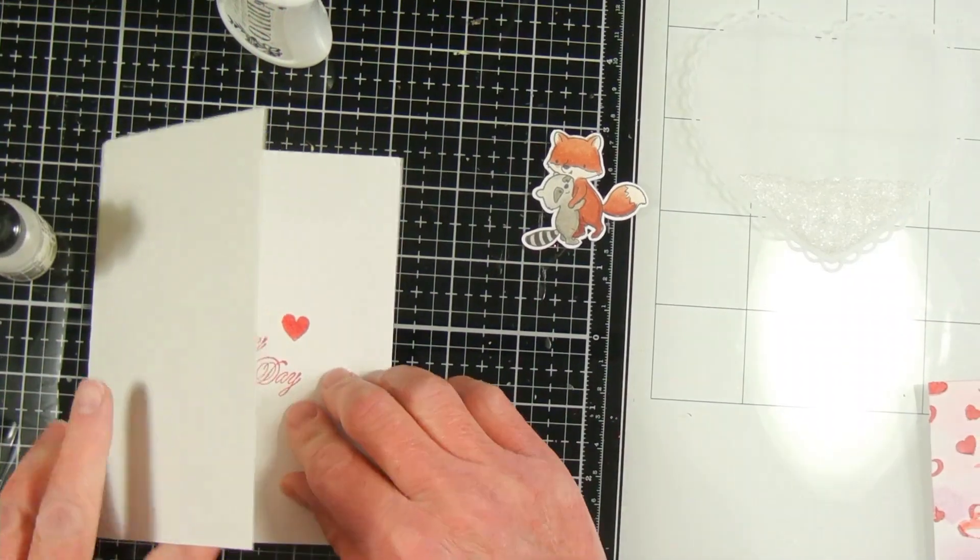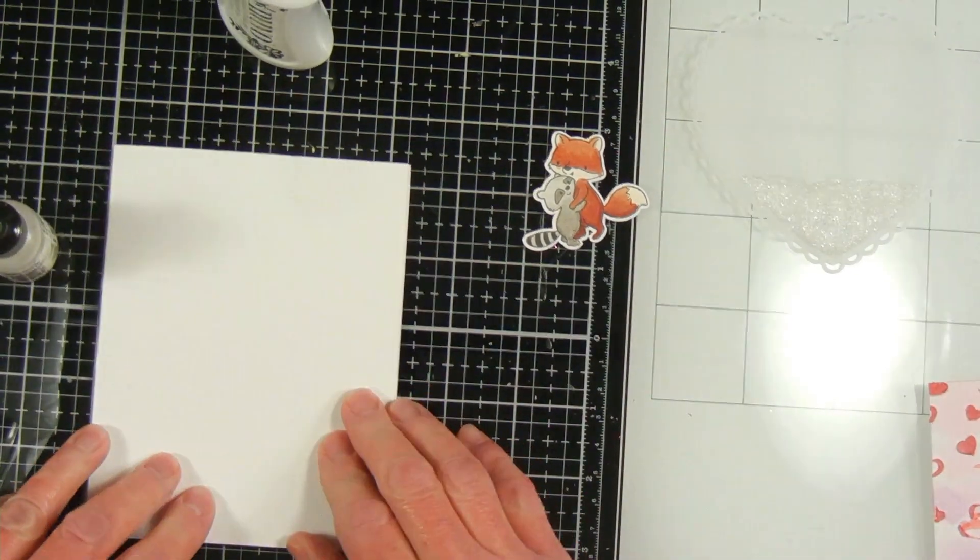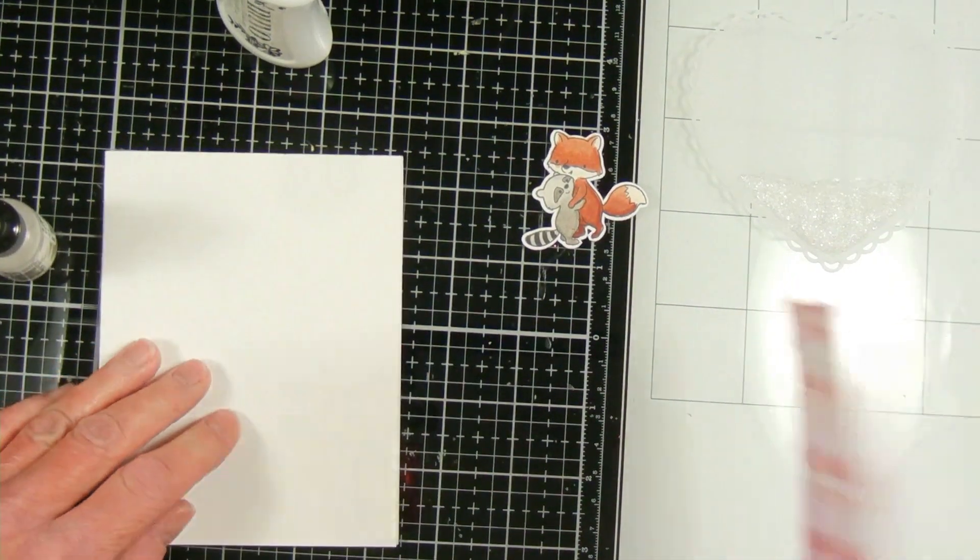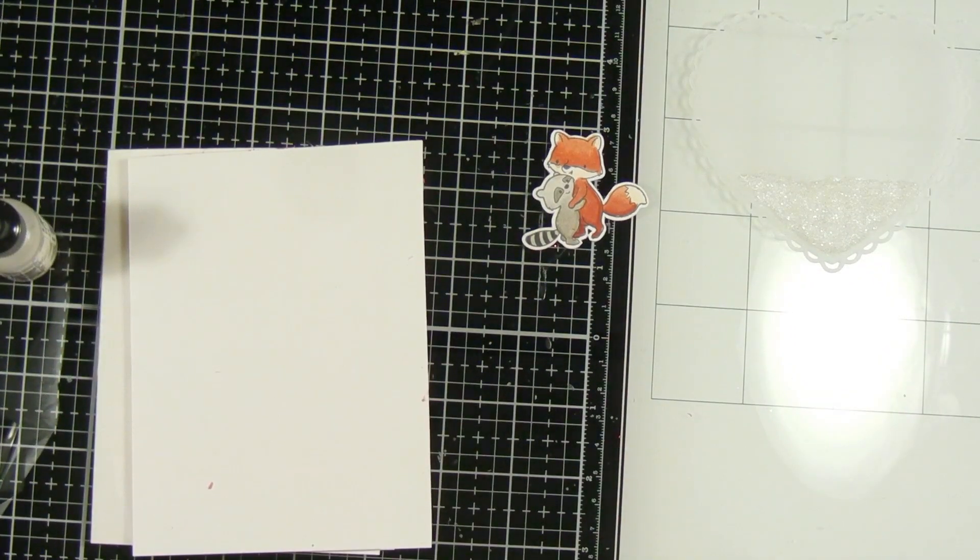I stamped the inside of my card with an old rubber stamp which is Happy Valentine's Day and I smudged it. So just where the smudge was I just found a big red heart and stamped over the smudge so it didn't show up. So that's a way you can fix a mistake.